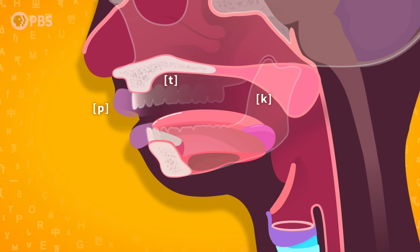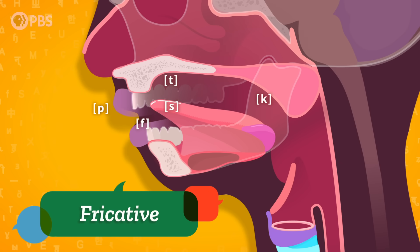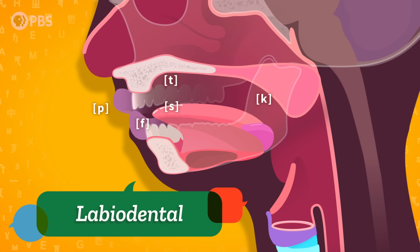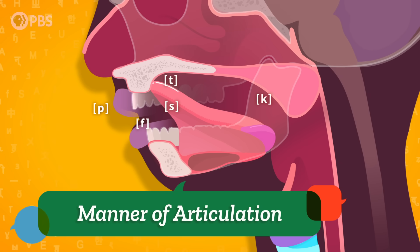We can put these sounds on a diagram of a mouth to show these different places of articulation. The square brackets here indicate that they're phonetic sounds, not English letters. Let's look at two more sounds: fuh and suh. Unlike our stops, these involve the air continuously flowing out of and causing friction in the mouth, so this type of sound is a fricative. Fuh is made using the bottom lip and top teeth, making fuh a labiodental sound. Suh is pronounced at the alveolar ridge just like tuh. This means suh and tuh have the same place of articulation, but they're different in their manner of articulation because tuh is plosive and suh is fricative.